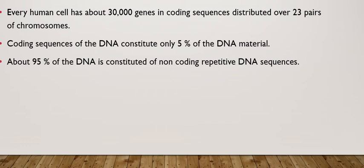The remaining 95% of the DNA is constituted of non-coding sequences, which are usually repetitive sequences — for example, AT, AT, AT — a sequence which is repeated over and over again. It had been thought that this 95% of the DNA is junk, with the only function being to increase the volume of the DNA. But later on, it was known that they have a bigger and more important function: control over the coding sequences, which constitute the 5% of the DNA.